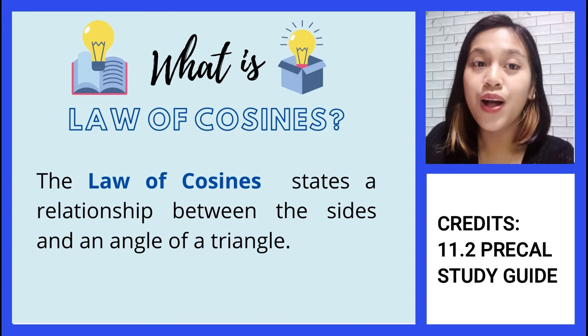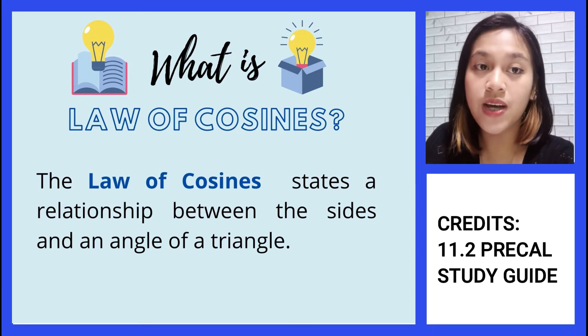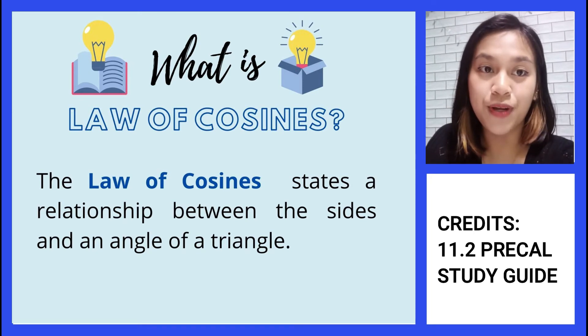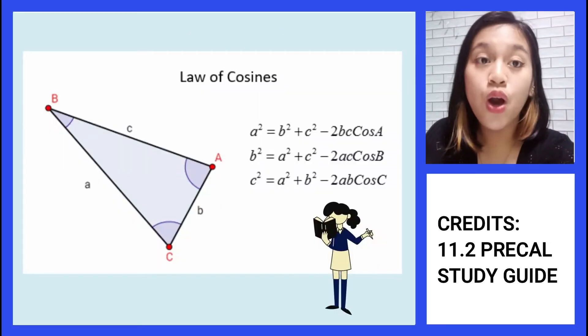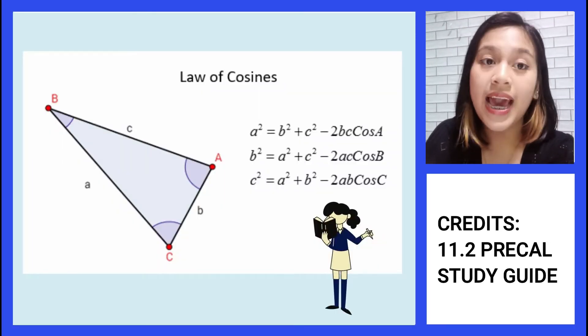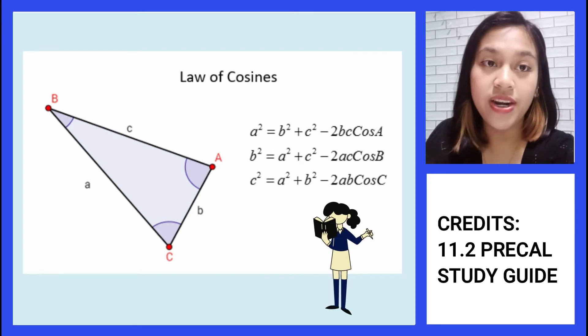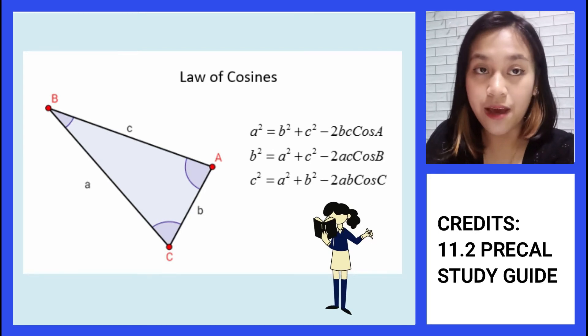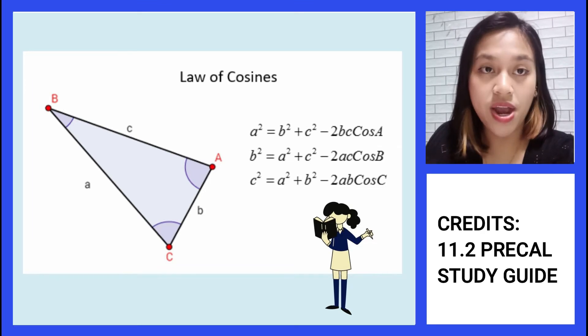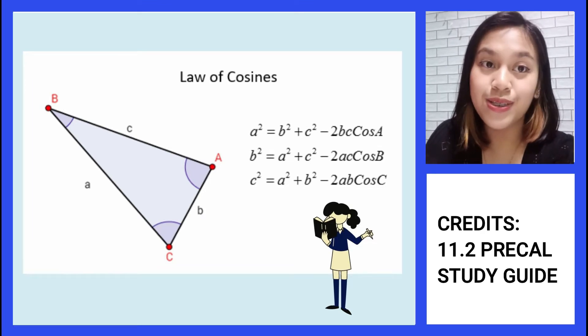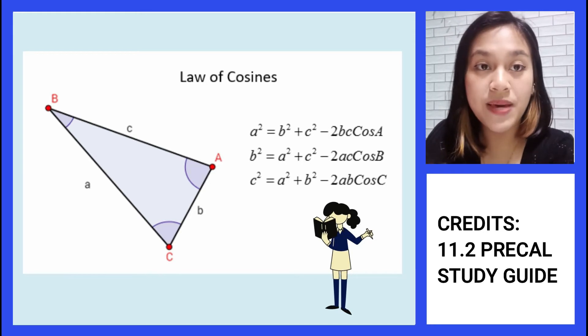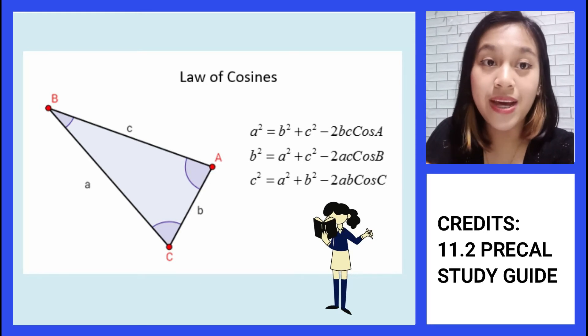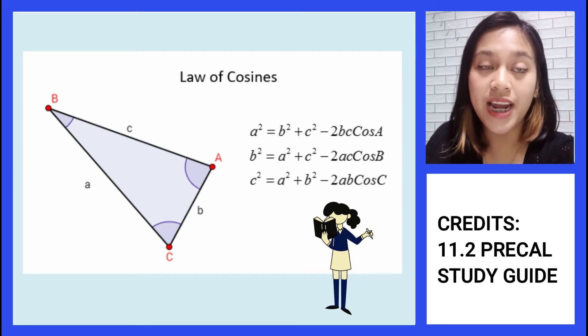What is law of cosines? Law of cosines, also called cosine law, states a relationship between the size of an angle of a triangle. By the law of cosines, we have these equations: a squared equals b squared plus c squared minus 2bc cos A. b squared equals a squared plus c squared minus 2ac cos B. c squared equals a squared plus b squared minus 2ab cos C. We can use this concept when we cannot set up a solvable solution using the law of sines.